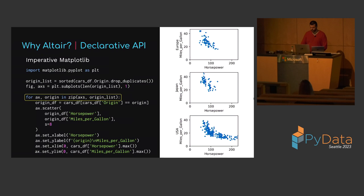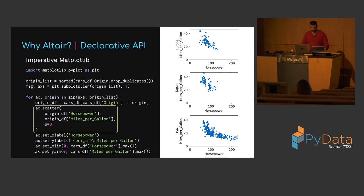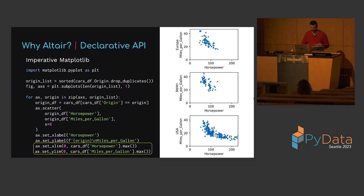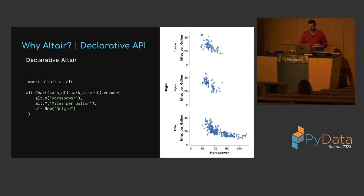Then create a figure with one subplot row for each origin value. Loop over the subplot axis and origin pairs, then filter the input dataframe to include only those rows for the given country of origin. Create a scatter plot using the horsepower and miles per gallon columns of the filtered dataframe, then set the x and y axis labels. Set the x and y axis limits to run from zero to the global max value, otherwise each subplot would have independent axis limits and they wouldn't line up.